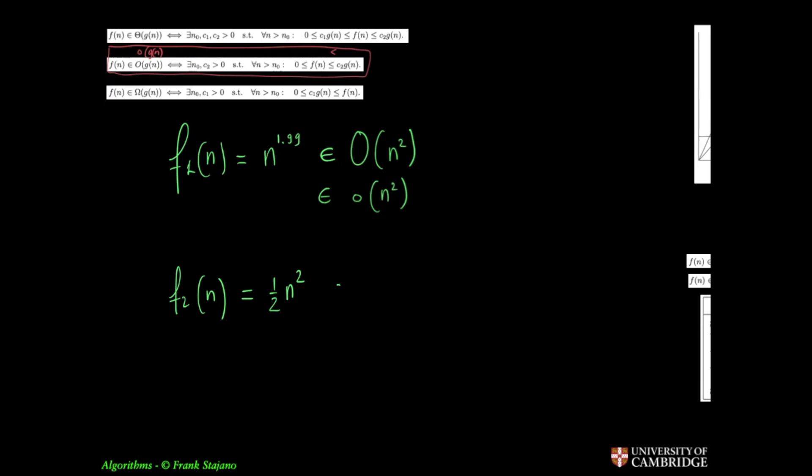If however I take this other function f2 of n equal one half of n squared, then this one is big o of n squared. It does not exceed the growth rate of n squared. But with the definition I have there in red it is also small o of n squared, which I don't like because it should not be small o of n squared, only if the growth rate of the f2 were strictly smaller than the growth rate of the g of n, which it isn't because it's the same.